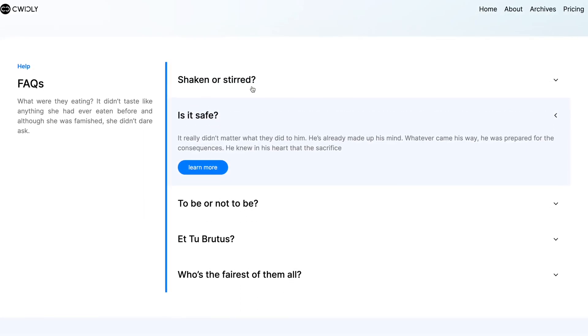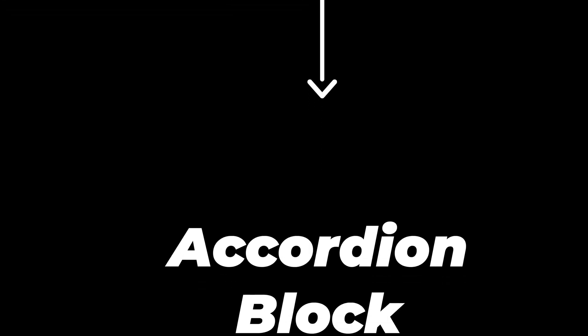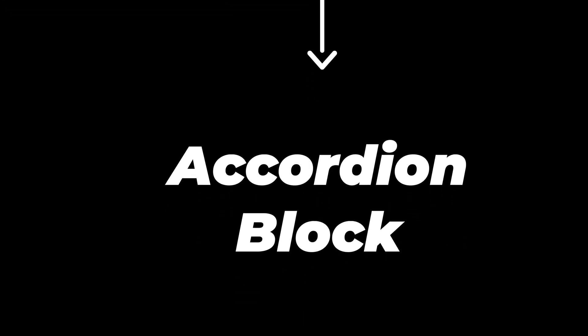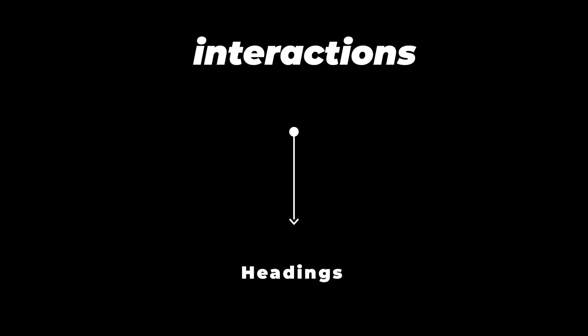In Quickly, you have the possibility to build accordions in two distinct ways: using Interactions or the accordion block. With Interactions, you have full control on your accordion, since you build its structure from scratch using divs, headings, etc., and manually set up your accordion's interactions.